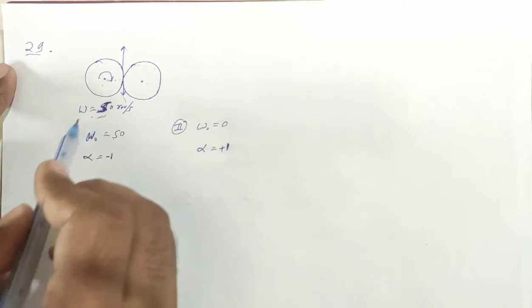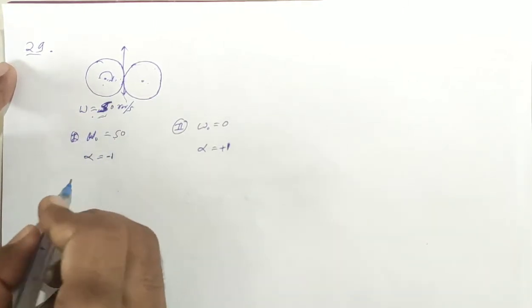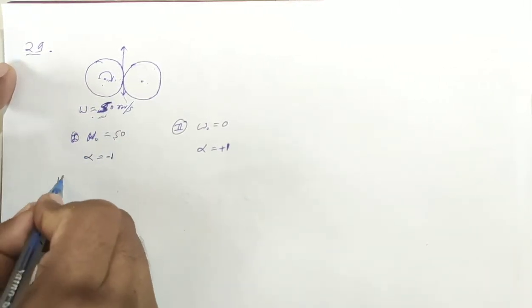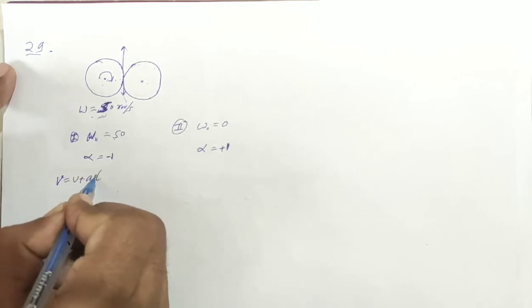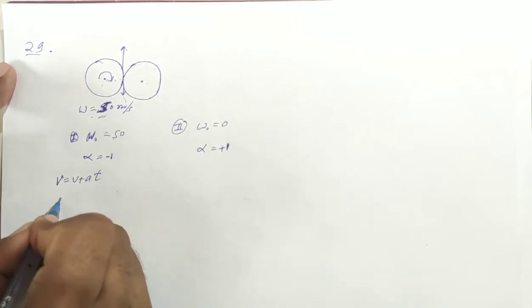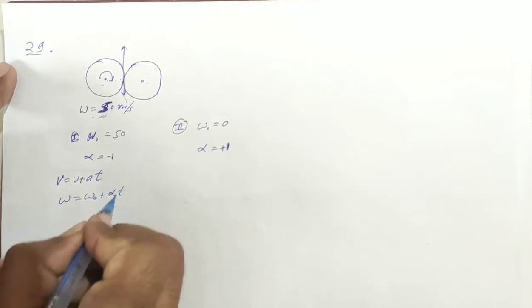Speed equals V equals U plus A T. If we convert it to rotation, omega equals omega naught plus alpha into T.